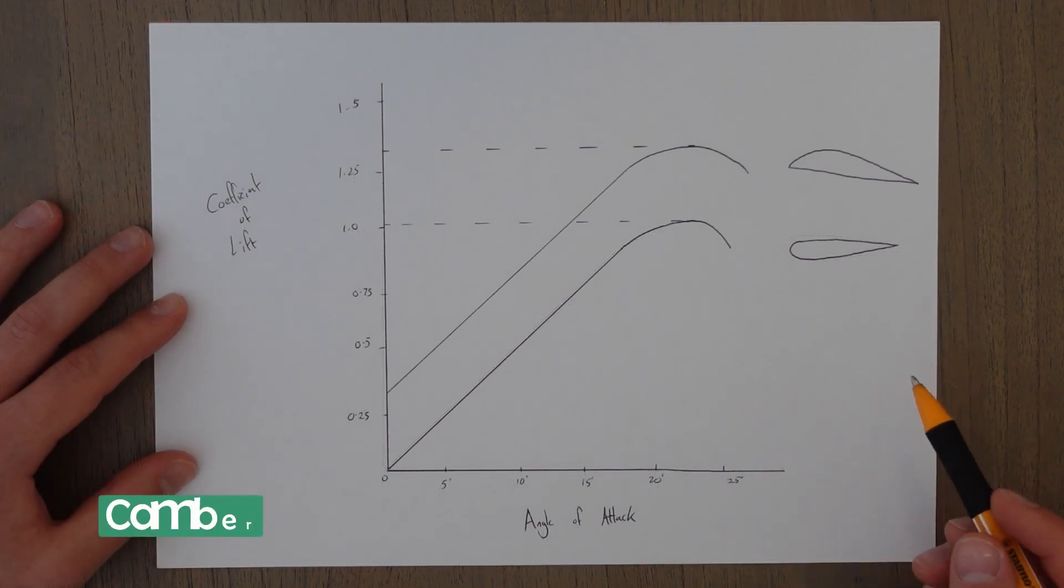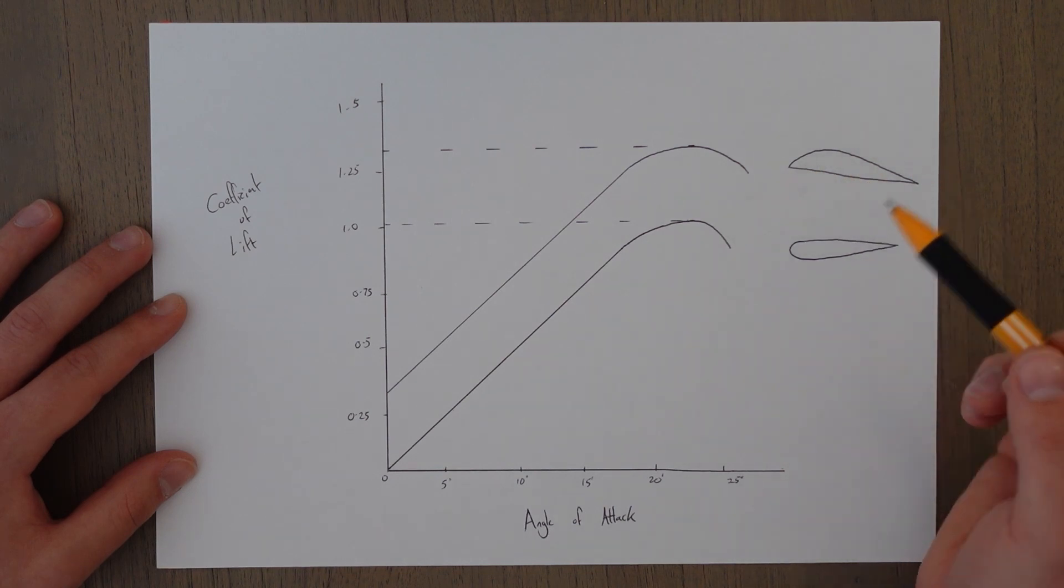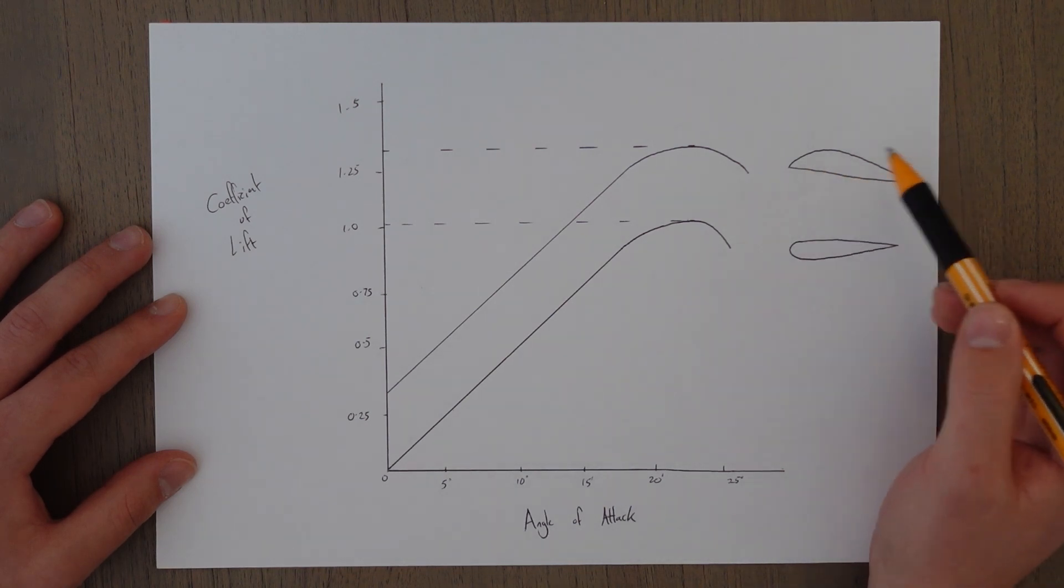Another big influencer over the coefficient of lift is the camber of a wing.